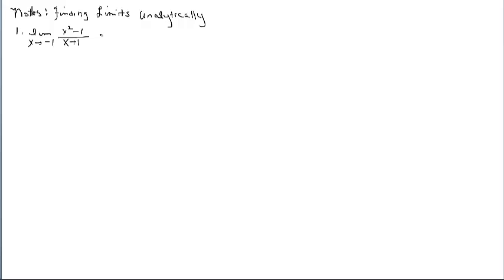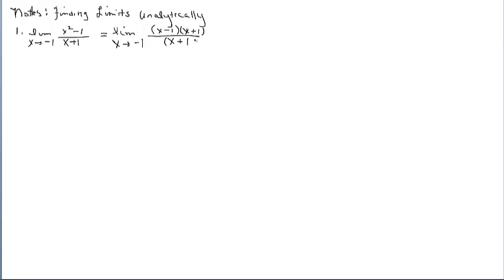When we study this, we see that the numerator can be factored. It's going to be factored into a sum and difference of like terms — one of the factors will cancel with the denominator. Notice that even though we're factoring, we keep the limit in front because we haven't substituted anything in. We can clearly see we're going to be able to cancel the x plus 1 factors, resulting in a discontinuity.